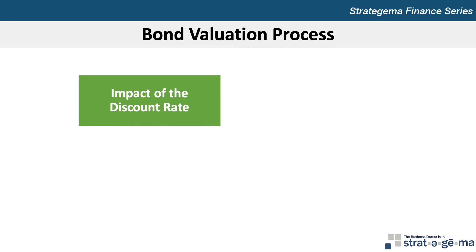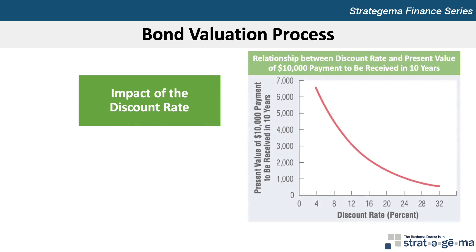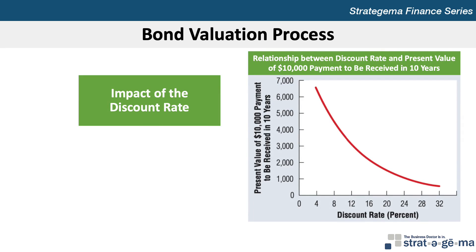The discount rate selected to compute the present value is critical in accurately valuing bonds. This graph shows the wide range of present values that would result from using different discount rates for a $10,000 payment in 10 years. The appropriate discount rate for valuing assets is any yield that could be earned on alternative investments with similar risk and maturity. Because investors require high returns on riskier securities, they use higher discount rates to discount the future cash flows of these securities. Consequently, a high-risk security will have a lower value than a lower-risk security with the same expected cash flows.